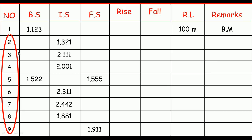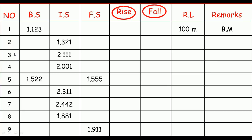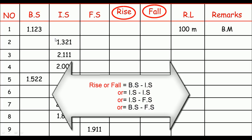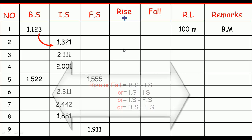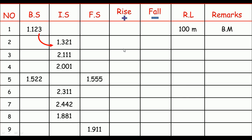To calculate the RL of all these points we need the rise and fall of each point. To calculate the rise and fall of each point, we start by subtracting the intermediate sights from back sights — like BS minus IS. This will give us the rise and fall. When the subtraction value is positive it means it's a rise; when the subtraction value is negative it means it's a fall.